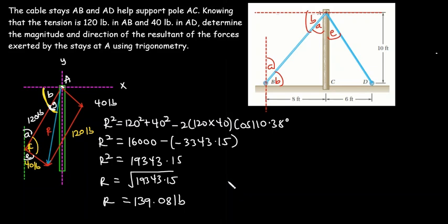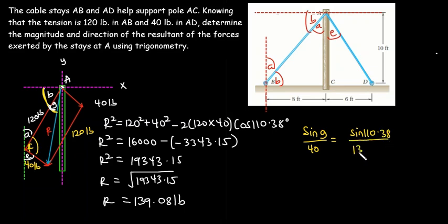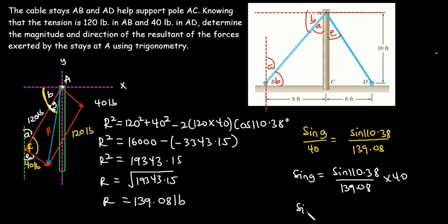Angle G is the angle opposite the 40 pounds force. Using the sine rule: sin(G) / 40 = sin(110.38°) / 139.08. So sin(G) = (sin(110.38°) / 139.08) × 40, which gives sin(G) = 0.27.